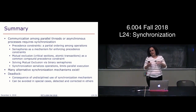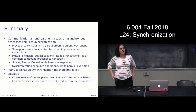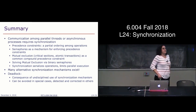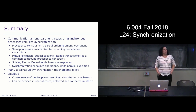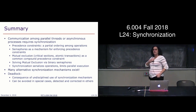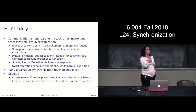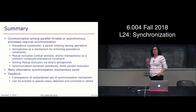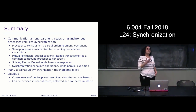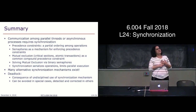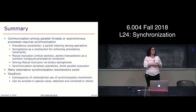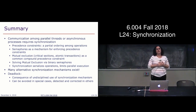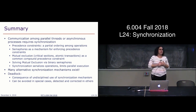That's basically it for today. We can execute multiple things in parallel, but we must worry about synchronization to ensure threads don't step on each other's toes. We use semaphores to deal with precedence constraints, resource constraints, and mutual exclusion. The last thing to be careful about is how you assign resources so you don't end up with deadlock. Thanks everybody, see you next time.